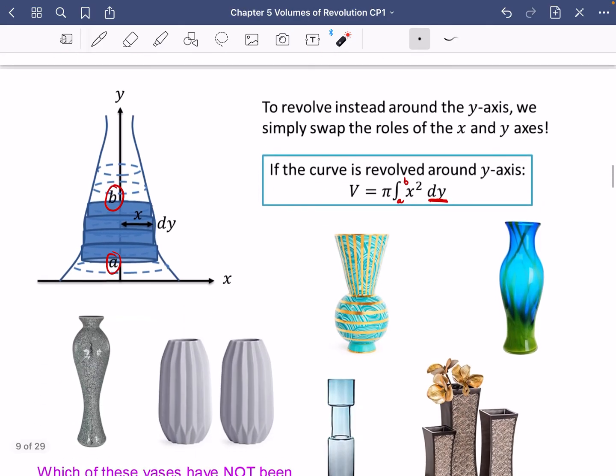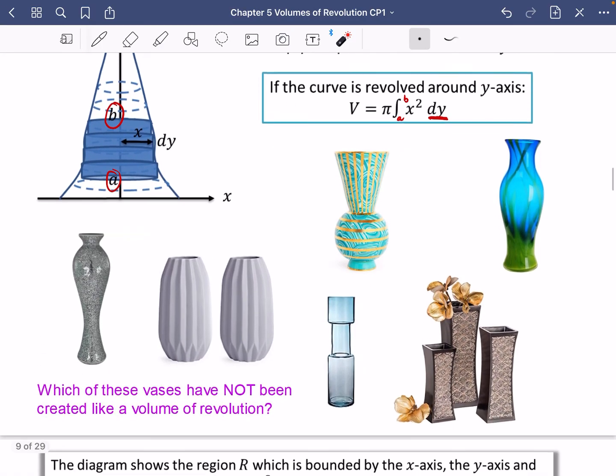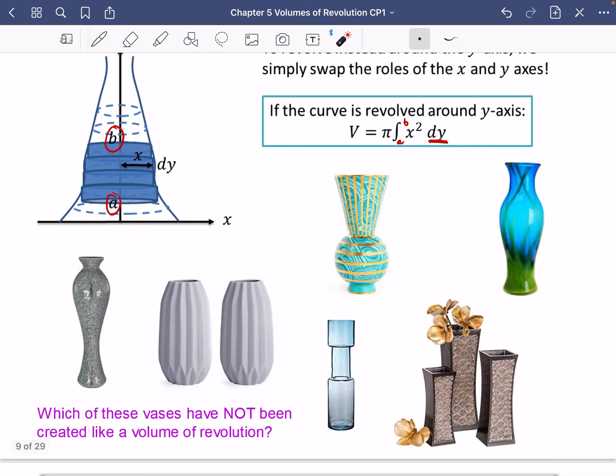So just before we do some actual examples with this, I've got a few different vases that I've drawn down here. And I want to think about which of these have not been created like a volume of revolution. So just pause, have a little think to yourself. Which of these are the ones that have been created in some kind of volume of revolution? And which ones haven't?